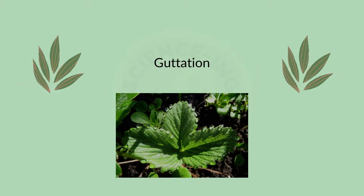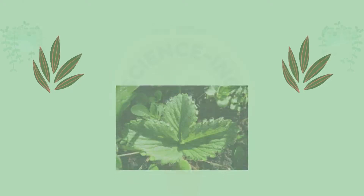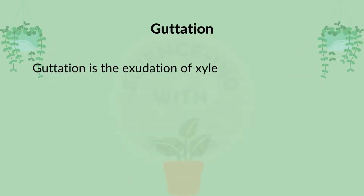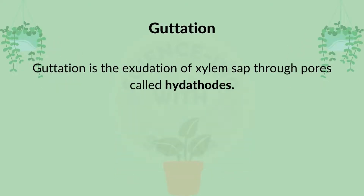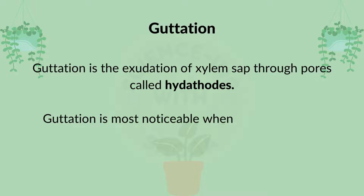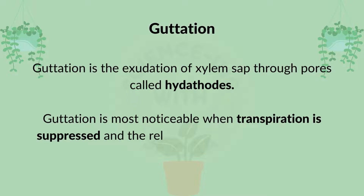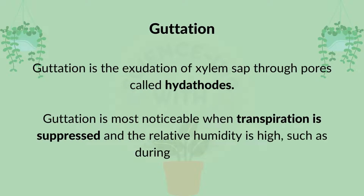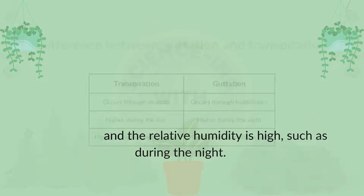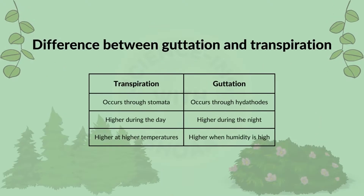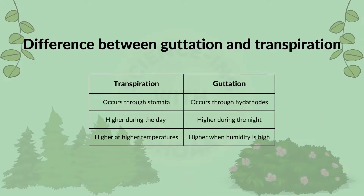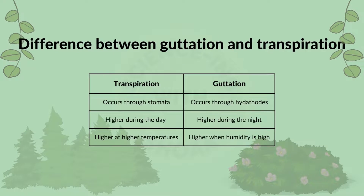Another process that is similar to transpiration is guttation. Guttation is the exudation of xylem sap through pores called hydathodes. Guttation is most noticeable when transpiration is suppressed and the relative humidity is high, such as during the night. Now let's talk about the differences between guttation and transpiration.